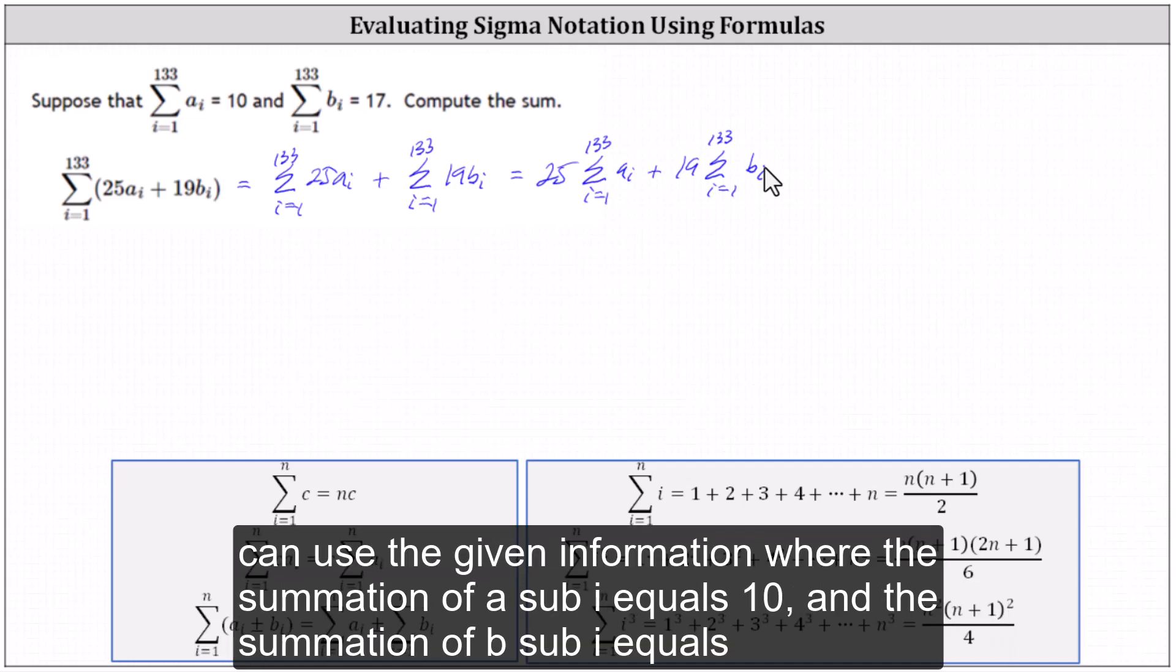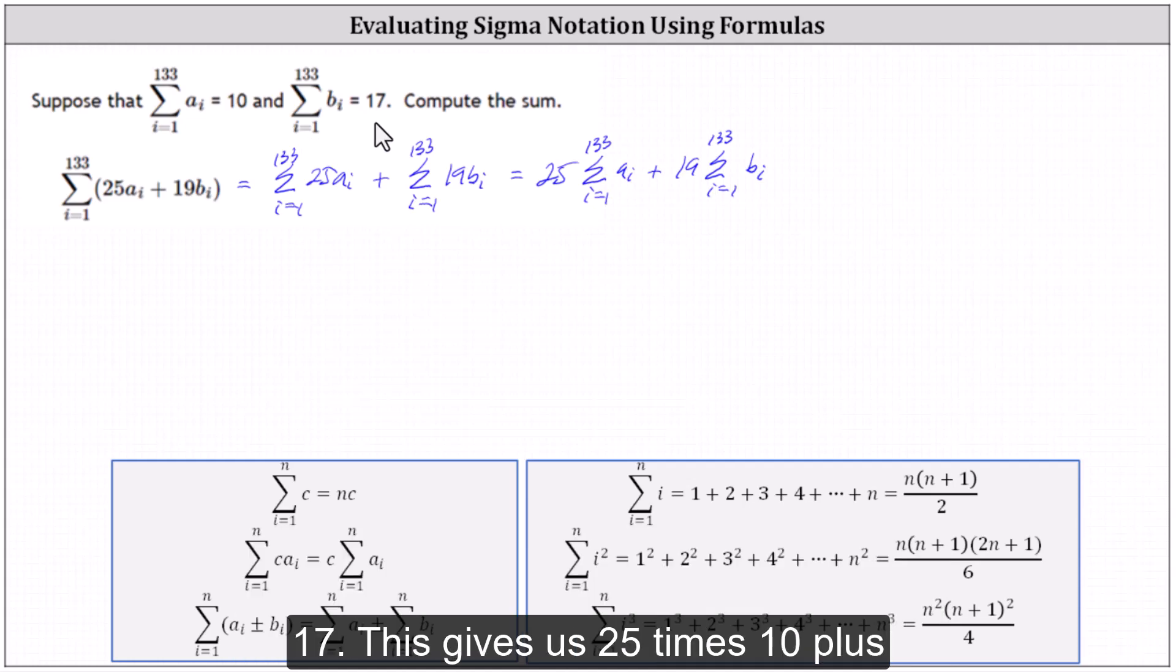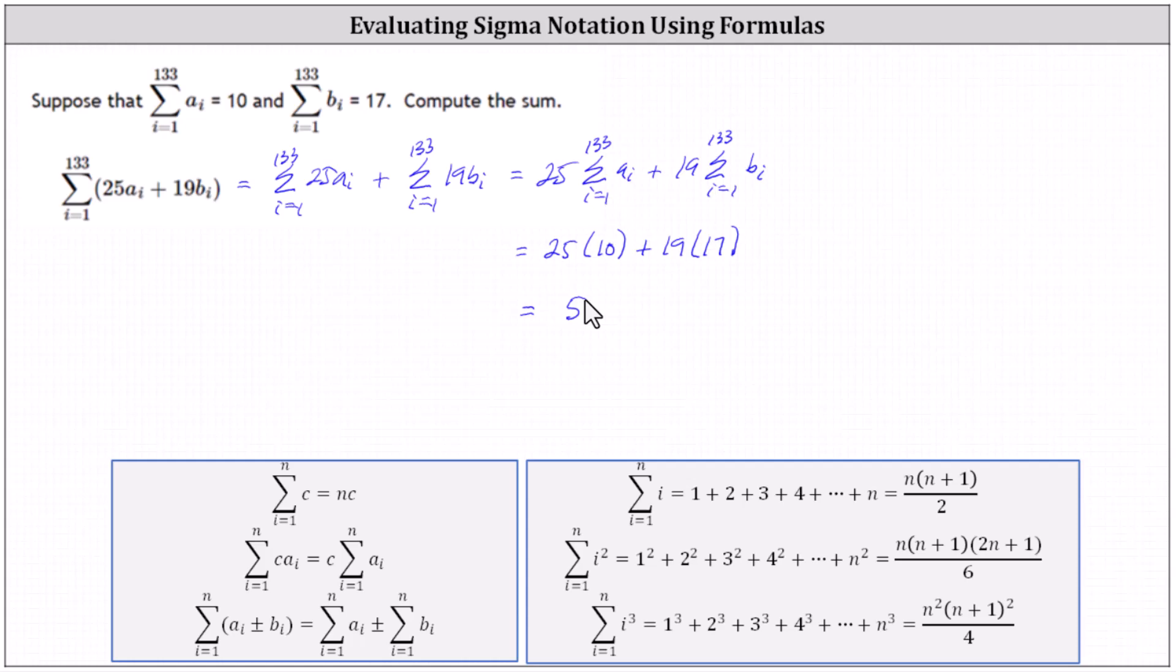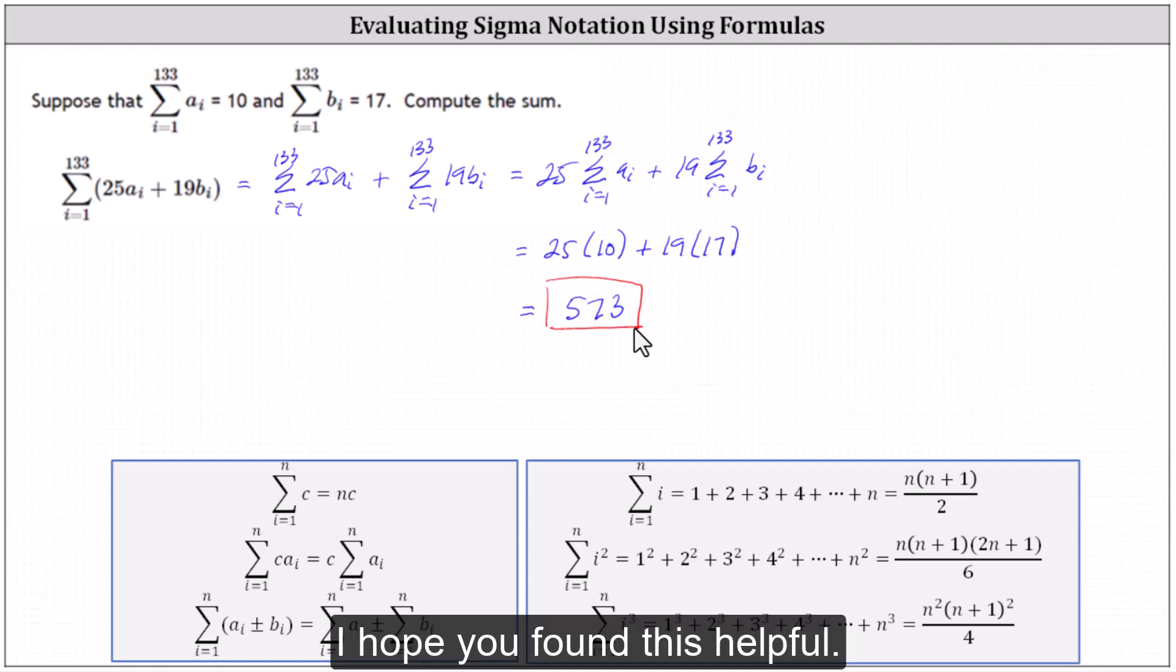And now we can use the given information where the summation of a sub i equals 10 and the summation of b sub i equals 17. This gives us 25 times 10 plus 19 times 17, which equals 573. I hope you found this helpful.